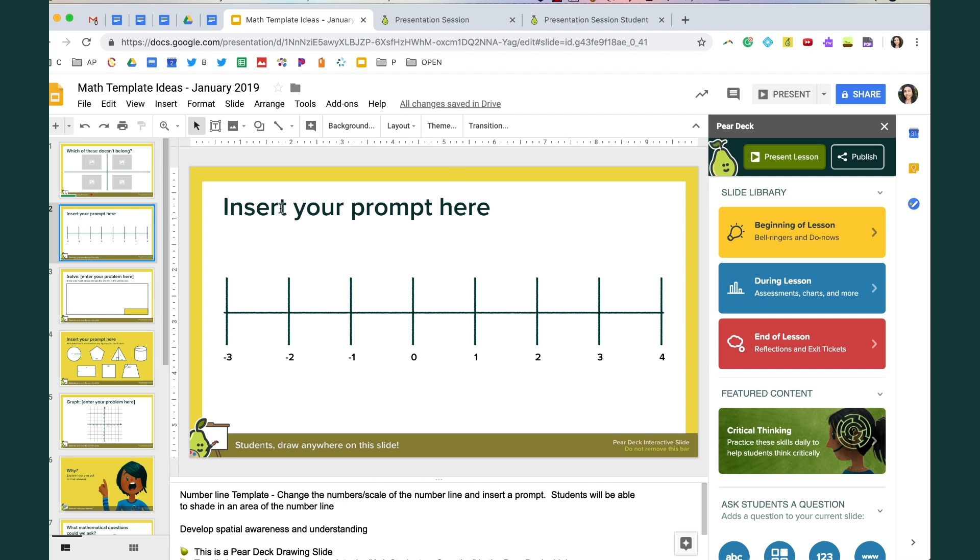The second one is insert your prompt here and it's a number line. These numbers can actually just be changed so it's really just a graphic for you to start from. You can change the numbers, you can even change the scale.